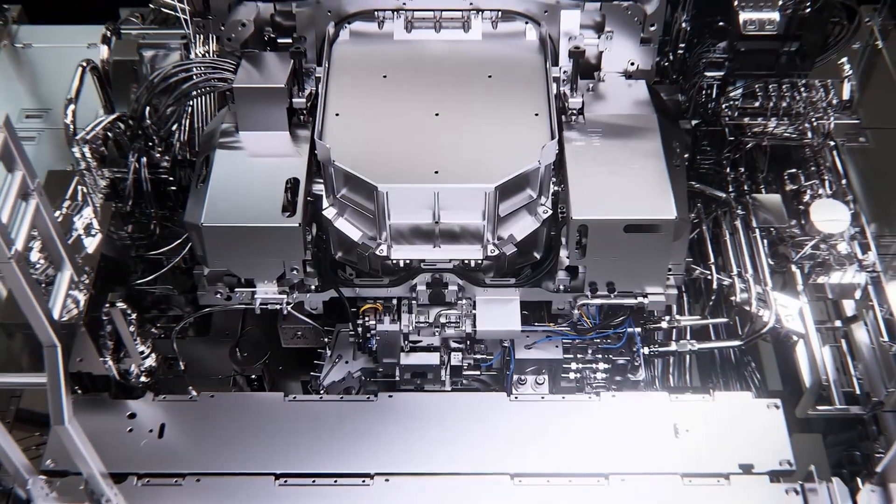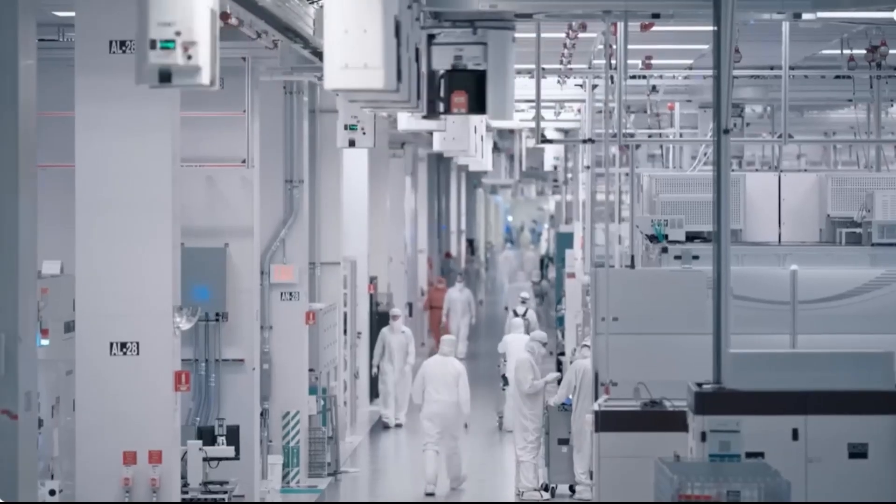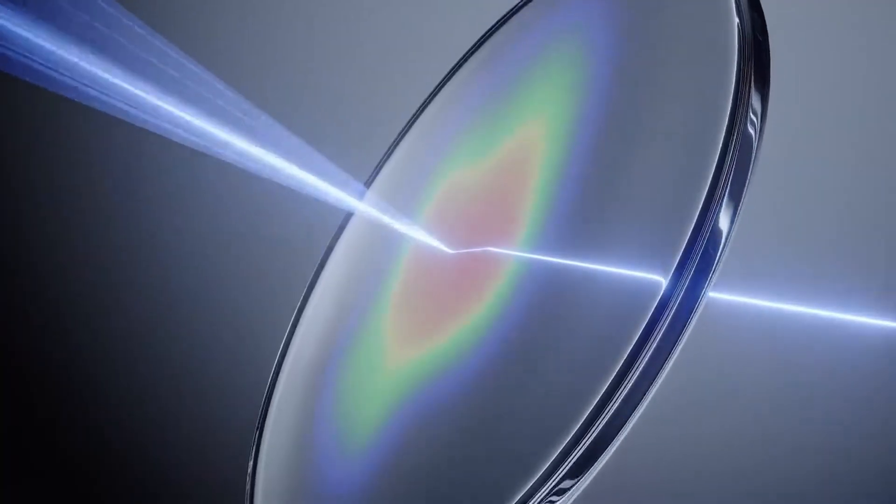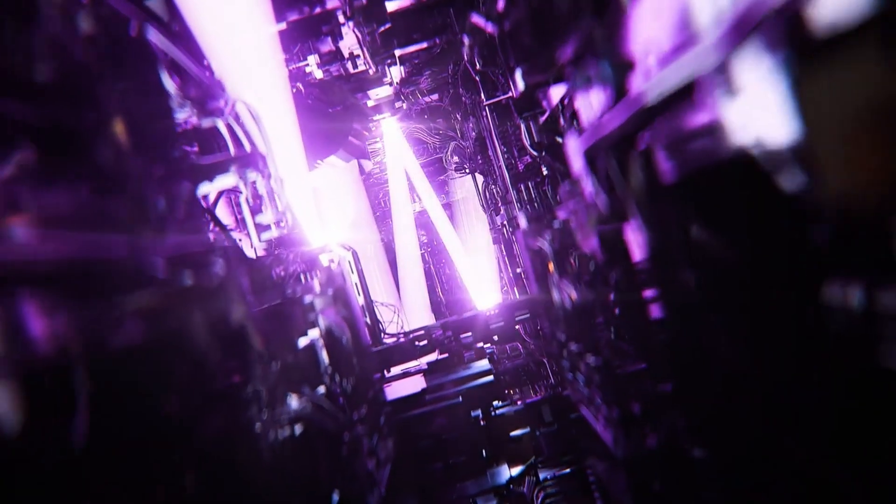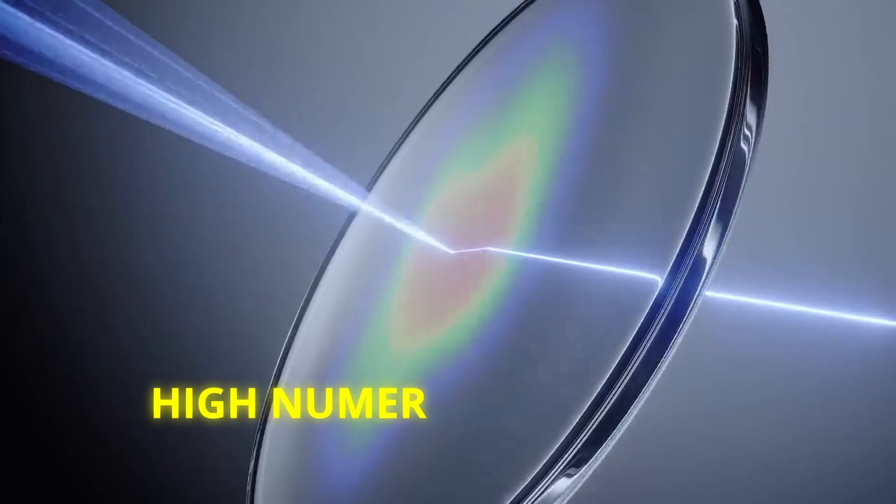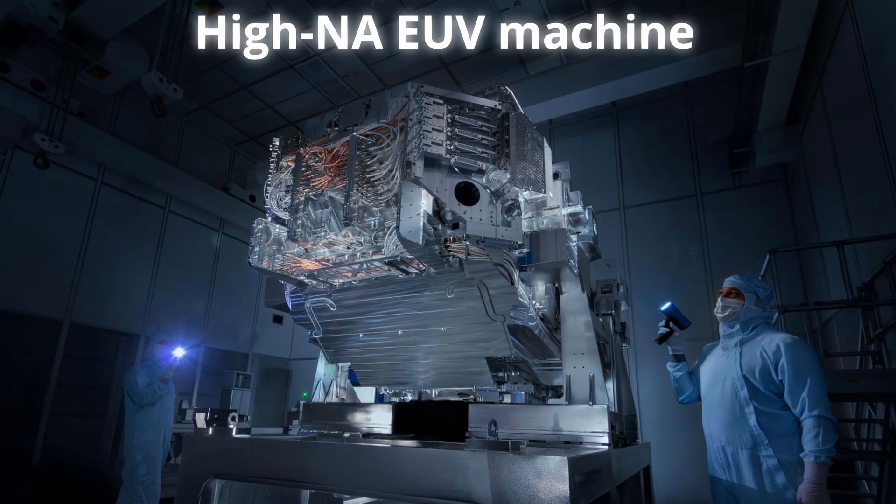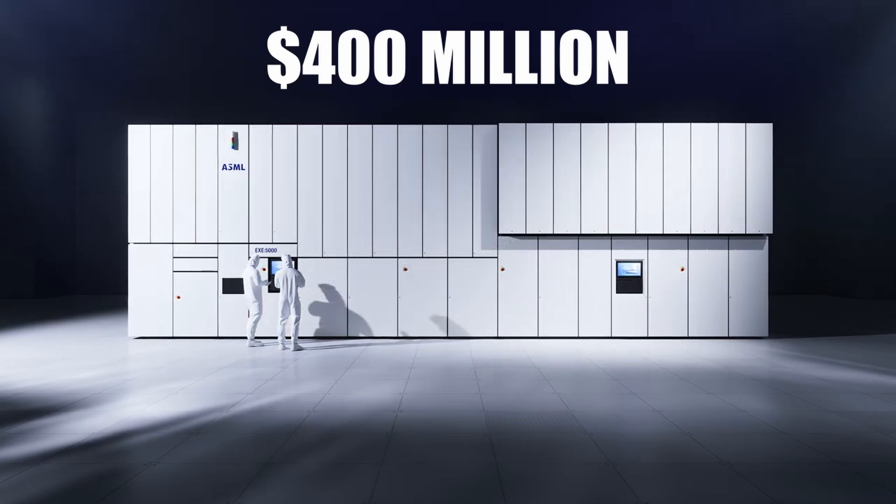This incredible machine is so big that it takes up three floors of a factory and weighs almost the same as a blue whale. It is the new generation of extreme ultraviolet lithography with high numerical aperture. It's ASML's high NA EUV machine. Each unit costs about 400 million dollars.